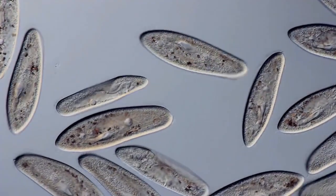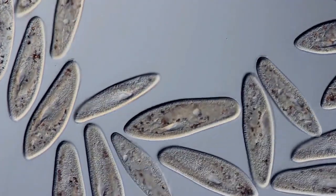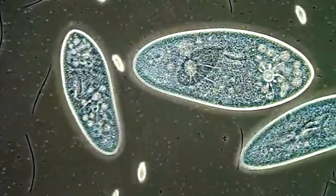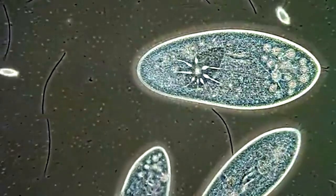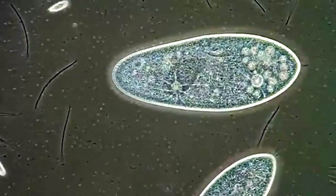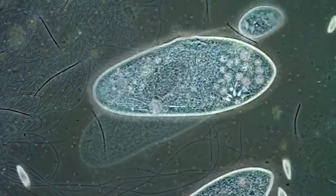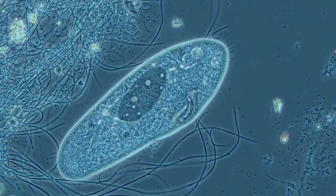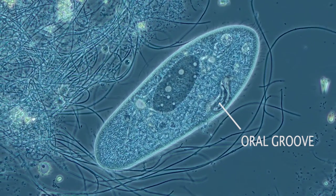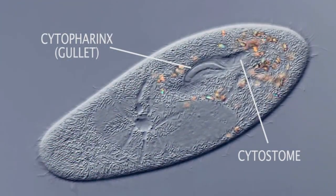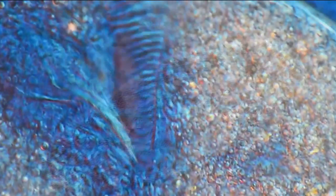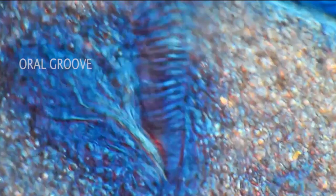If a drop of water containing paramecium is placed on a slide, the animals may be seen with the naked eye moving rapidly from place to place. Under the microscope they appear cigar-shaped. A closer view reveals a depression extending from the end directed forward in swimming, obliquely backward and toward the right, ending just posterior to the middle of the animal. This is the oral groove. The cytosome is situated near the end of the oral groove. It opens into a funnel-shaped depression called the cytopharynx or gullet, which passes obliquely downward and posteriorly into the endosarch. The oral groove gives the animal an unsymmetrical appearance.